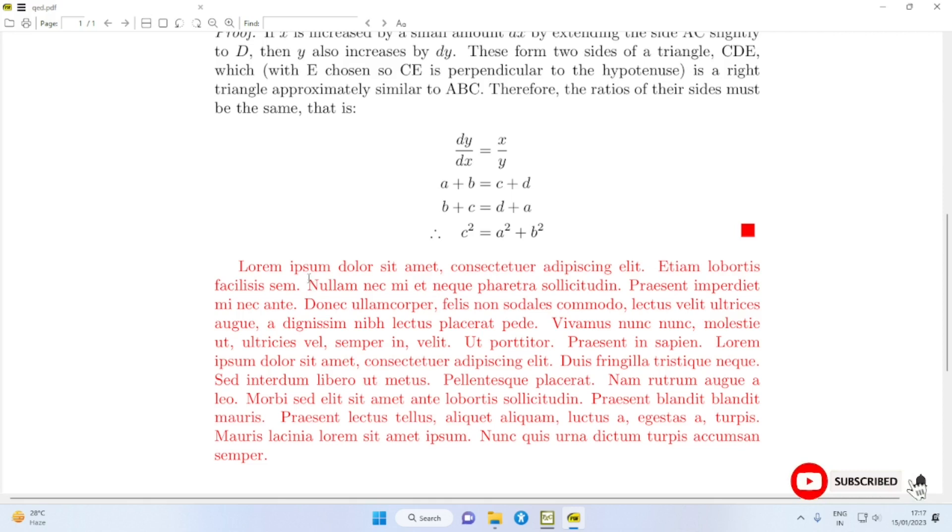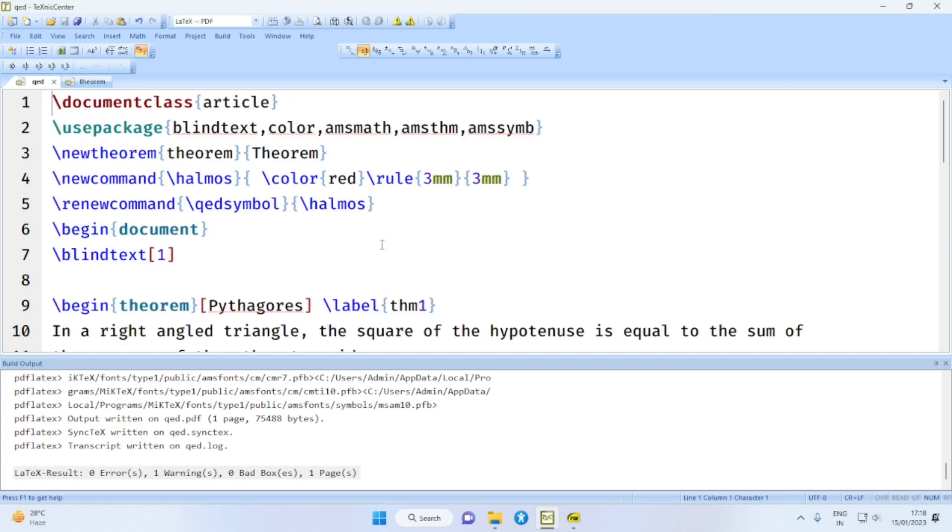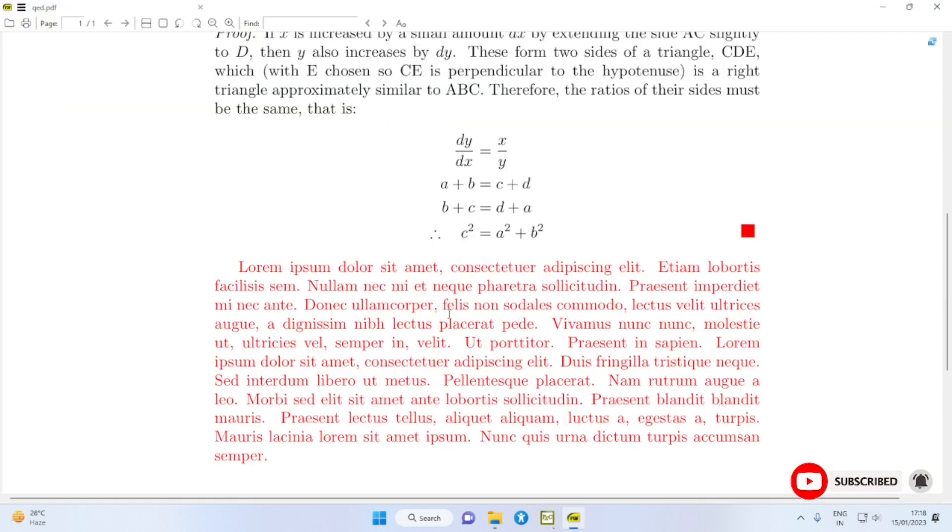Of course, the following paragraph is also in red color. For that, what you may do is you can put one more pair of curly braces. This will solve this problem. You will have the QED symbol at the end of the aligned environment.